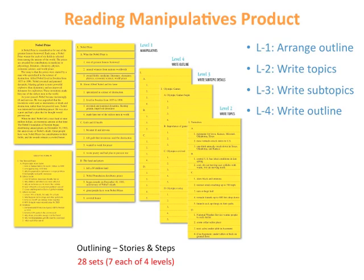No skill is a better tool for writers than outlining. Organizing topics, subtopics, and details leads to well-structured, coherent compositions. These sets develop outlining skills in four stages.